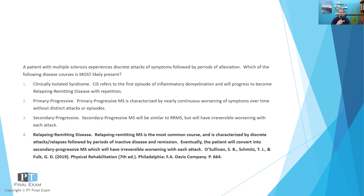Typically, relapsing remitting disease will convert into what's called secondary progressive MS. Secondary progressive MS is where you still have relapsing and remitting periods; however, each relapse results in a worsening or progression — what O'Sullivan calls irreversible worsening with each attack.